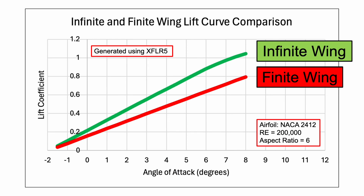We can see the effects of wingtip vortices on the lift coefficient in the lift curve graph. The lift curve of the finite wing, shown in red, is less steep and has smaller lift coefficients than the infinite wing, shown in green.